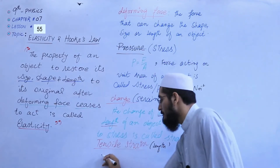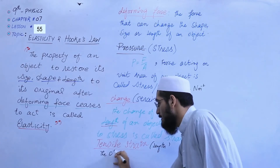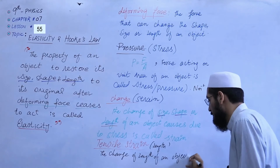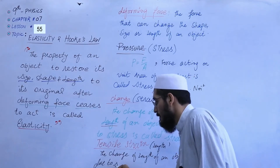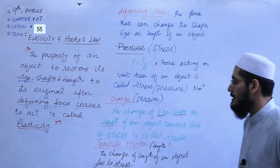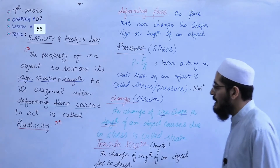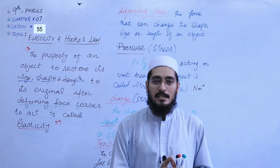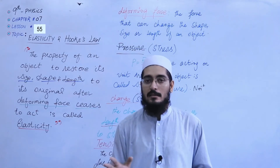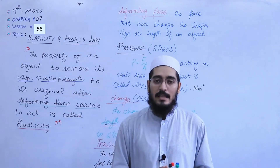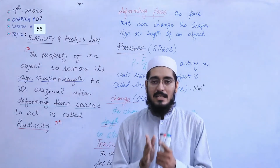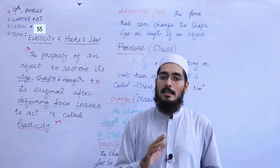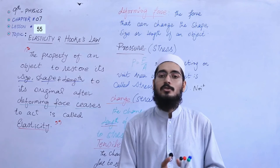Is it clear? For example, the change of length of an object due to stress — this is called tensile strain. Now here is a possible confusion: if you are asked whether we can say tensile strain or just strain — the answer is we can say both. Because stress produces three types of changes: size, shape, or length. If we specify length, we call it tensile strain; otherwise, we just say strain.